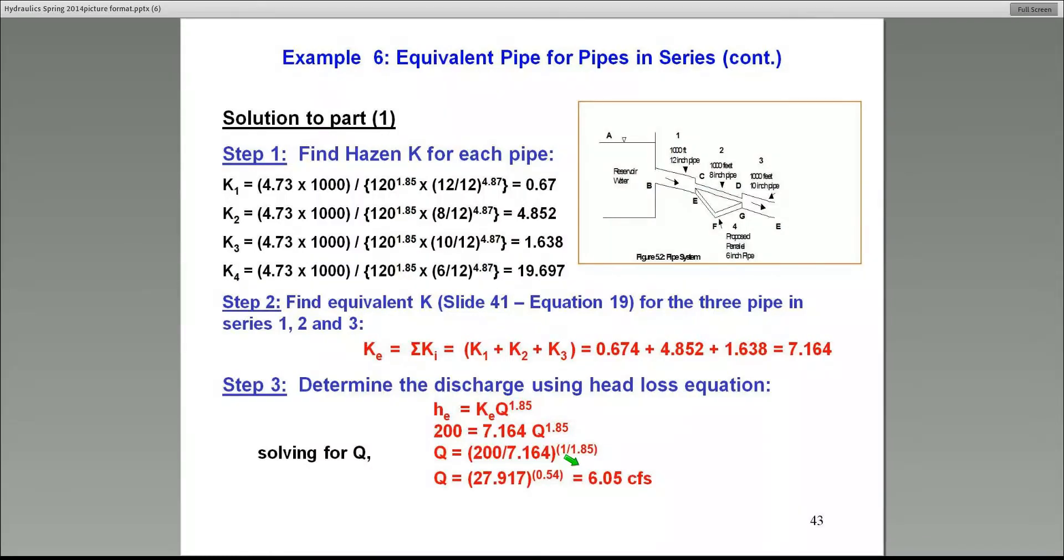Before I go to the next part of the problem, I want to talk about this equivalent KE. This is called the equivalent pipe method. Very often, let's say you want to replace these three pipes with one single pipe. Then all you have to do is consider this so-called equivalent KE for those three pipes.